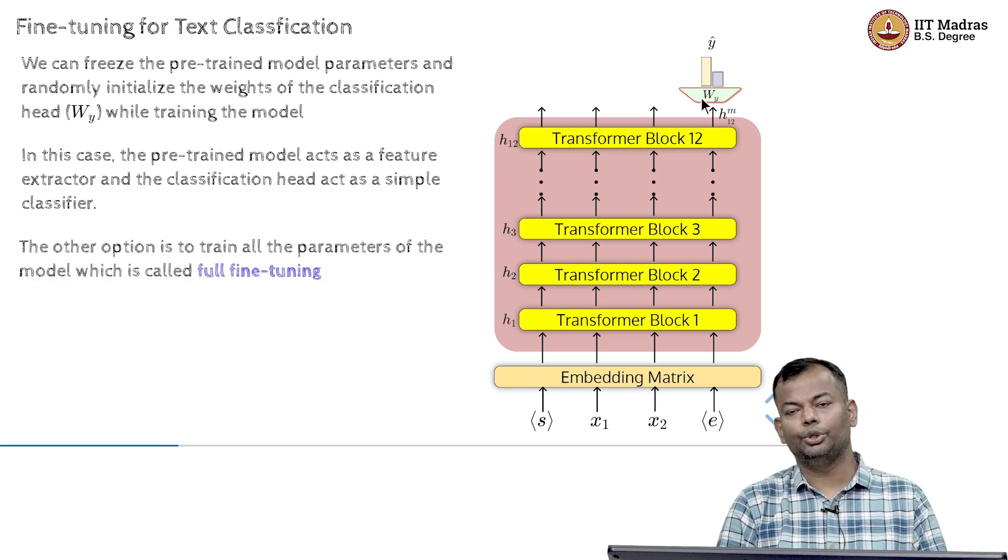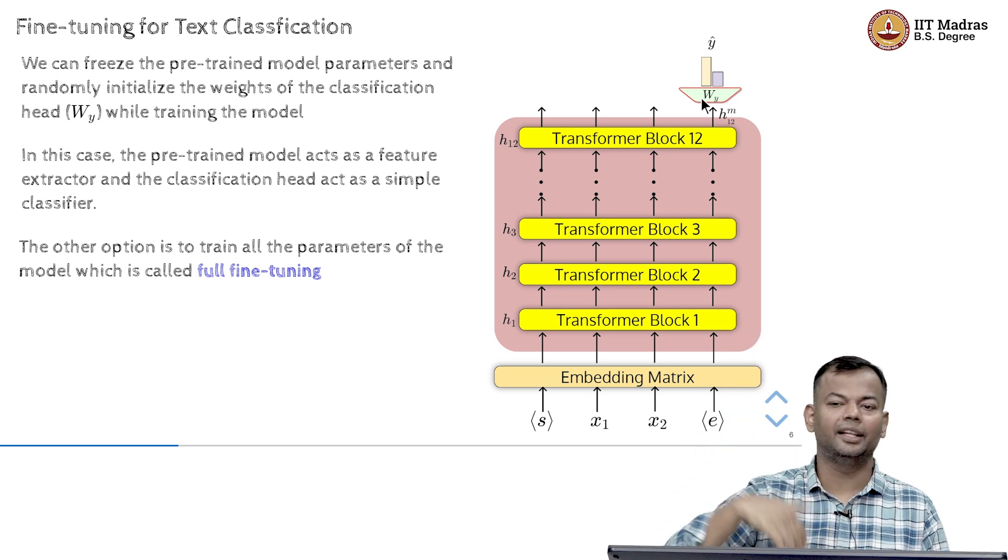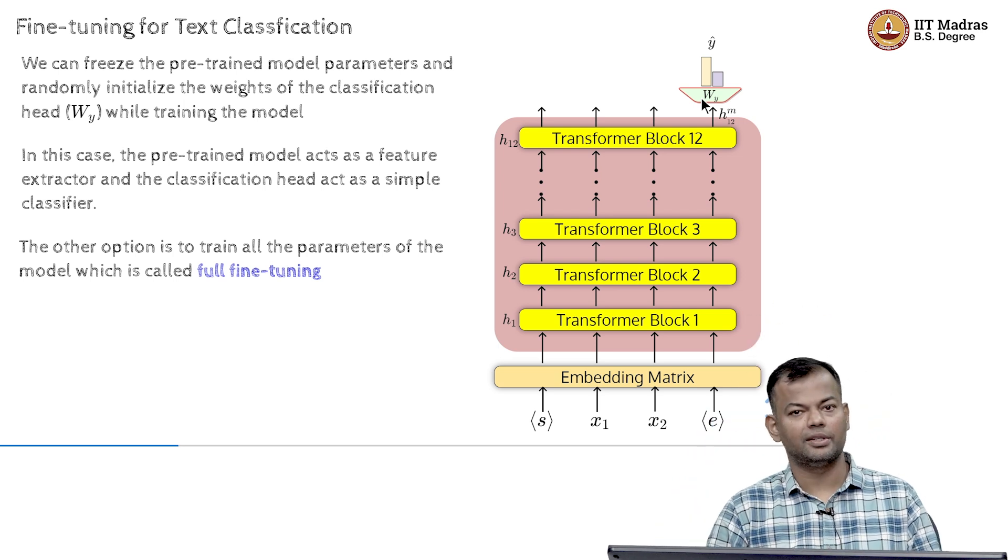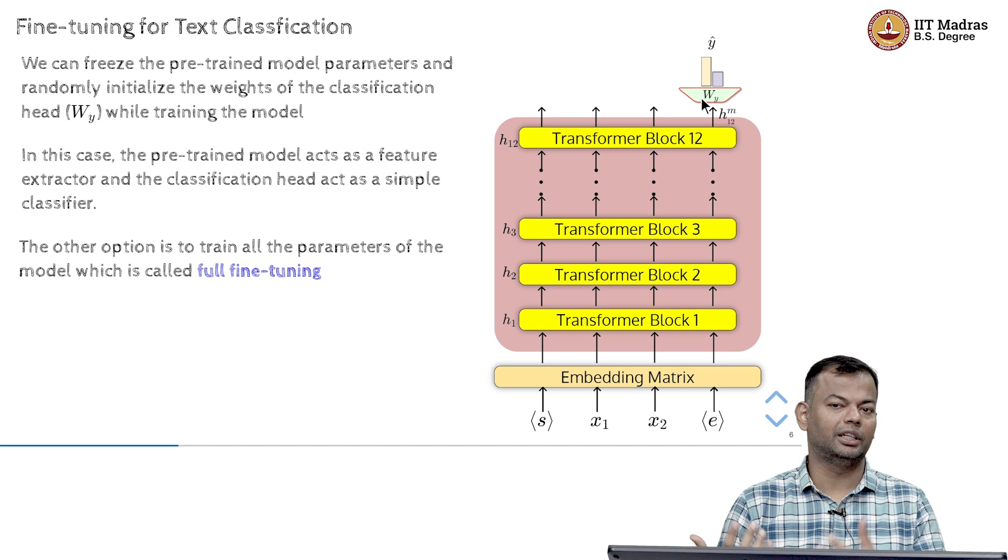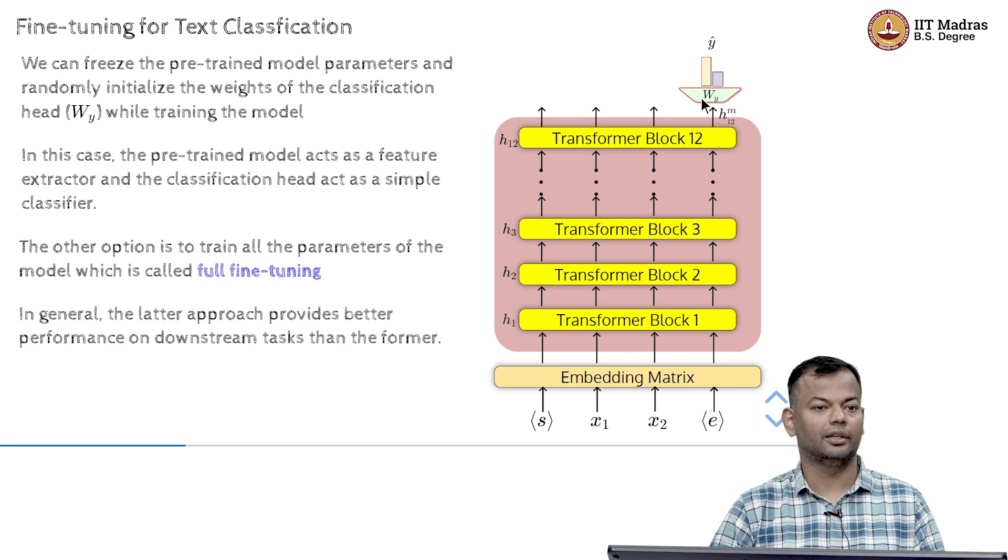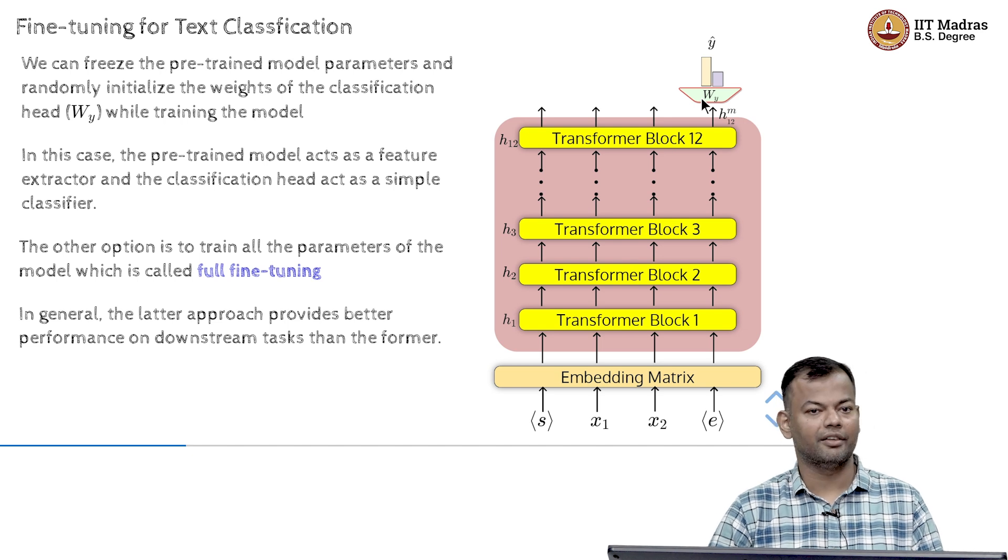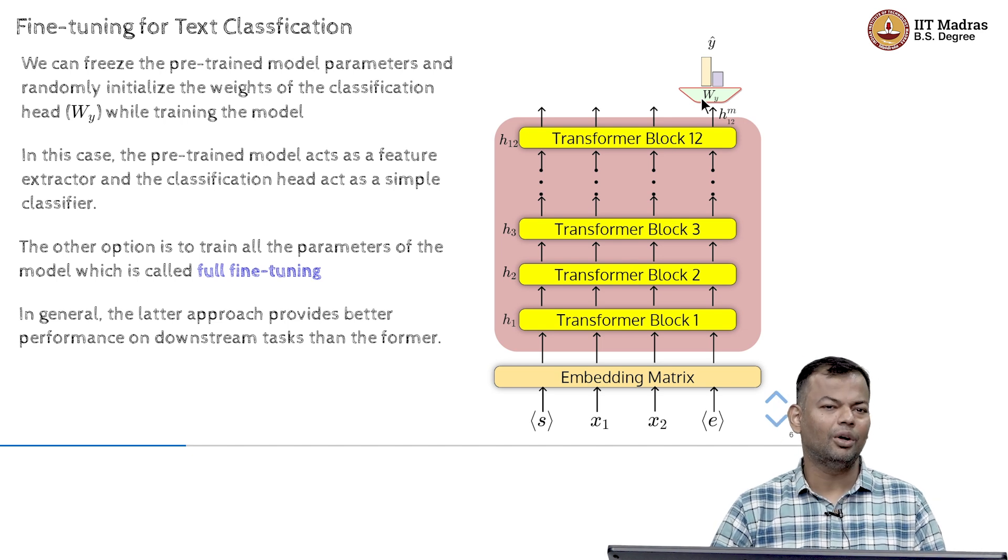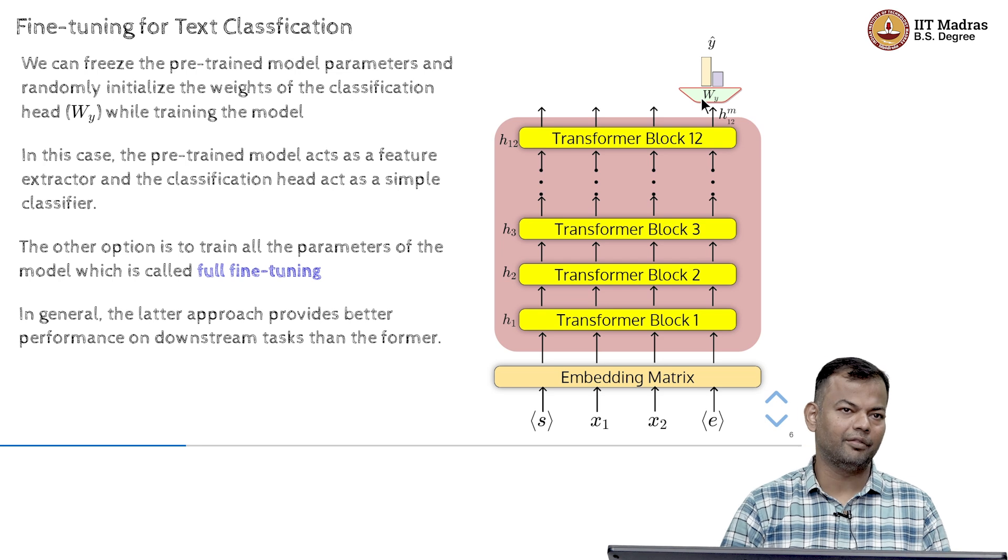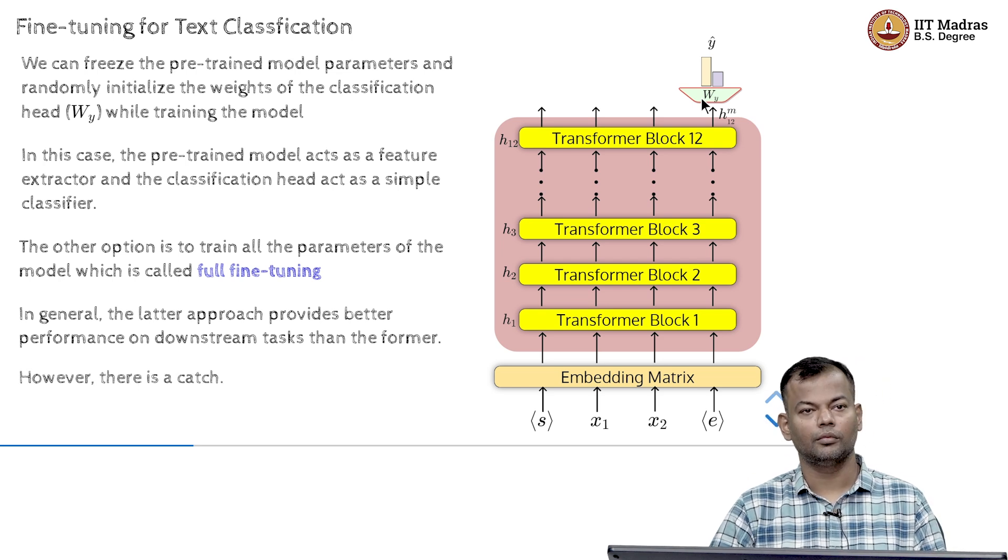You could also do what is known as full fine tuning where you are going to fine tune the entire network, not very common to do especially if you are dealing with like a 13 billion or 30 billion parameter model. Although, in practice it does give better performance but it's still not recommended. And there are better ways of doing this which we will talk about soon.